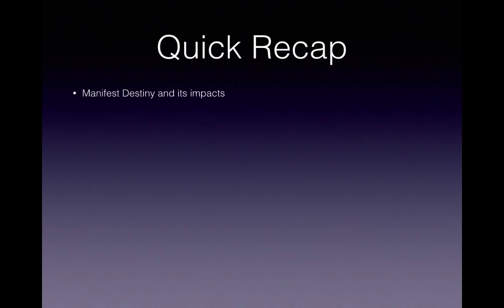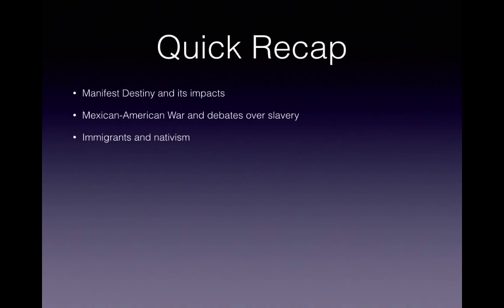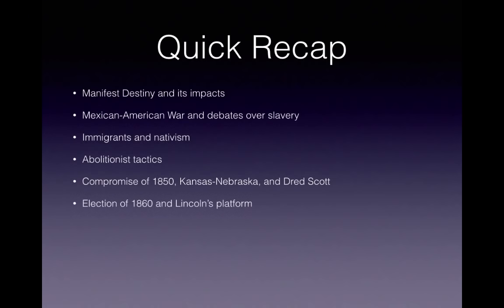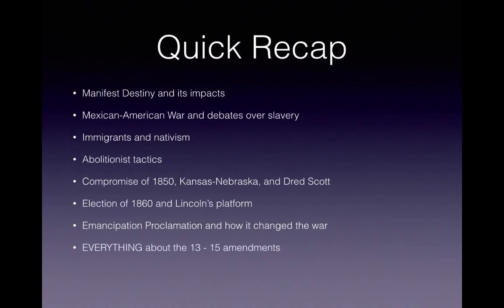Quick recap: Manifest Destiny and its impacts — especially as it relates to slavery. Mexican-American War and debates over slavery — think of the Wilmot Proviso. Immigrants and nativism — how did they face discrimination? Abolitionist tactics — be familiar with three of them. Compromise of 1850, the Kansas-Nebraska Act, Dred Scott — know all of them and how they ultimately all failed. The election of 1860 and Lincoln's platform as a free soiler. The Emancipation Proclamation and how it changed the war. Everything about the 13th, 14th, and 15th Amendments. And the end of Reconstruction — don't forget the word waning.